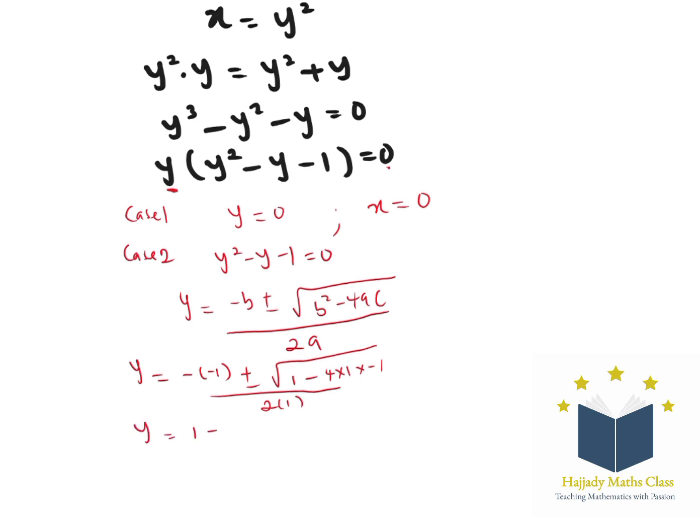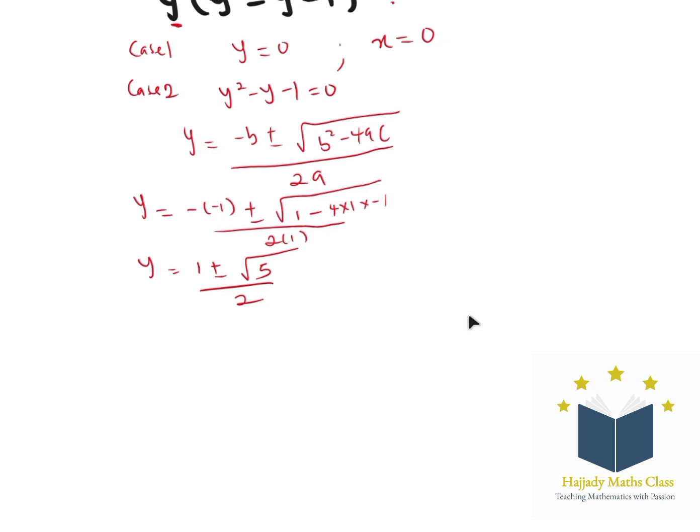So here my y can equal 1 plus or minus root 5 over 2. Or y can equal 1 plus root 5 over 2, or y can equal 1 minus root 5 over 2.